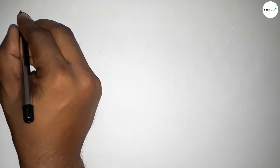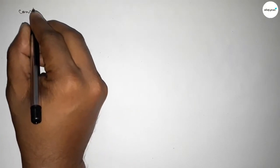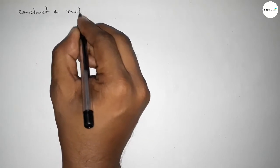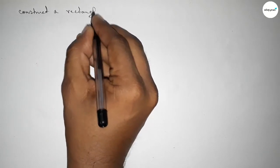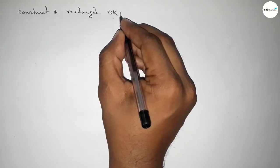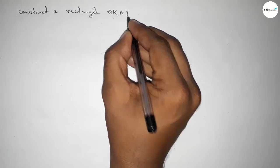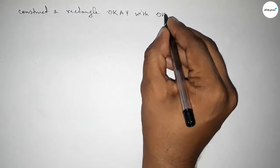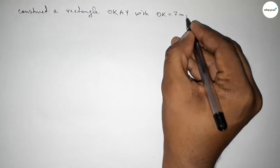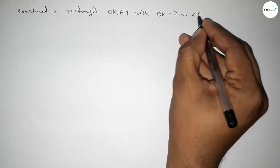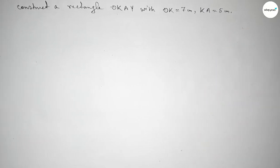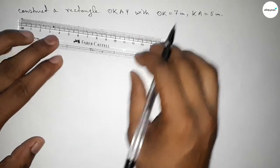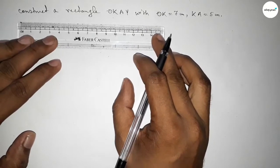Hi everyone, welcome to SI Share Classes. Today in this video we have to construct a rectangle with OK equal to 7 centimeters and KA equal to 5 centimeters. So let's start the video.